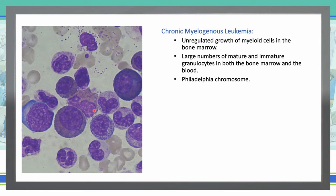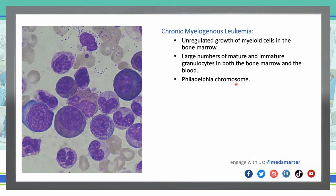Chronic myelogenous leukemia is characterized by unregulated growth of myeloid cells in the bone marrow, resulting in large numbers of mature and immature granulocytes in both the bone marrow and blood. It is caused by a chromosomal translocation known as the Philadelphia chromosome — an unusually short chromosome resulting from reciprocal translocation t(9;22), containing the fusion gene BCR-ABL1. The presence of this translocation is required for the diagnosis of CML. On the smear you can see what looks like a garden of mature and immature granulocytes.